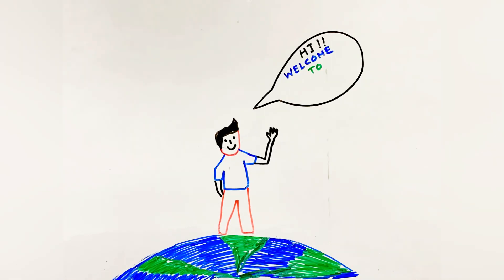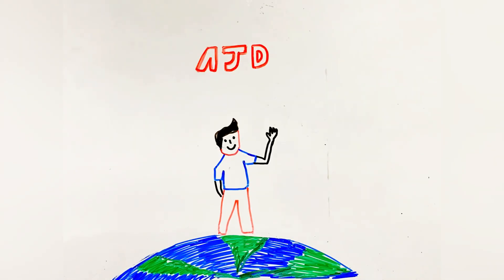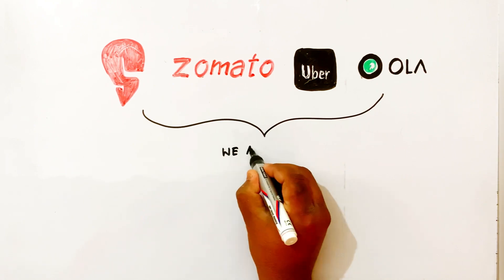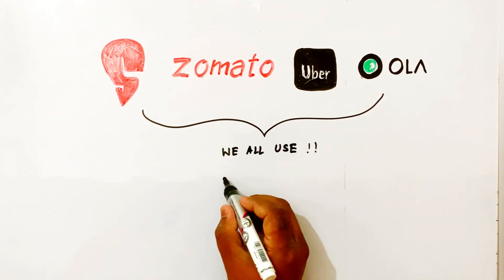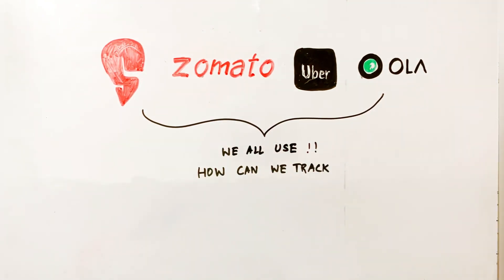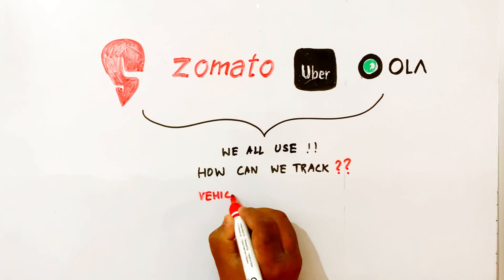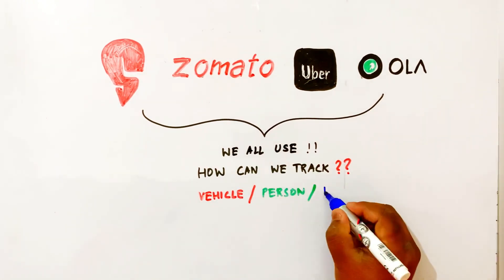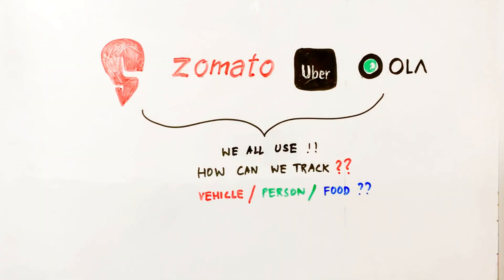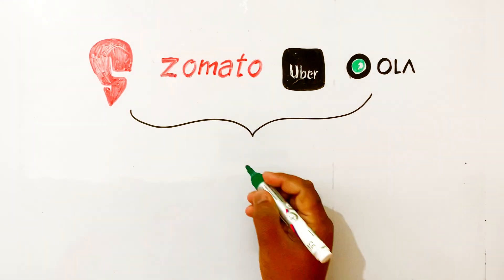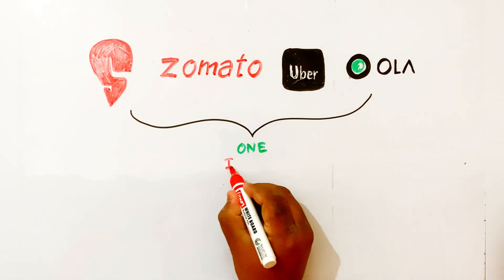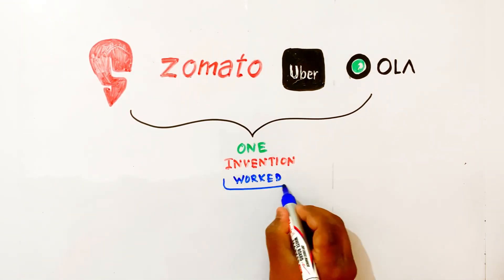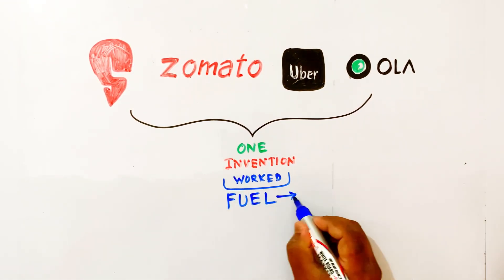Hello guys, welcome back to my channel AJD Technical. We are using apps like Swiggy, Zomato, Uber, and Ola, but we don't know how to track vehicles. So, the invention of this startup — we work on the fuel and GPS tracking side of things.